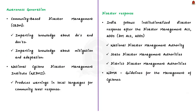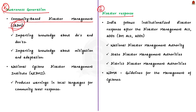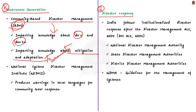The next step is awareness generation. Creating awareness among the grassroots will result in long-lasting positive impacts. India follows Community-Based Disaster Management, CBDM, through which people are imparted knowledge regarding the dos and don'ts during disasters. Knowledge regarding both mitigation and adaptation is provided to the community. The National Cyclone Disaster Management Institute, NCDMI, also plays an important role, collecting cyclone-related information and focusing on research.